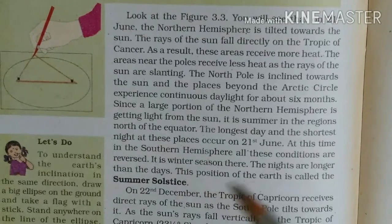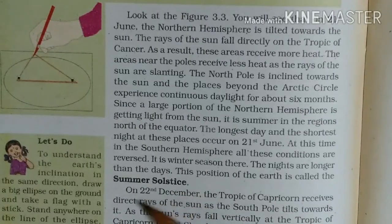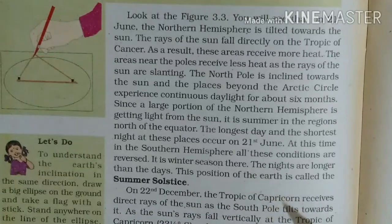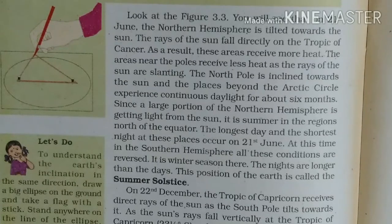This position is called the Summer Solstice. Now on 22nd December, the Tropic of Capricorn receives direct rays of the sun as the South Pole tilts towards it. The rays fall vertically on the Tropic of Capricorn.